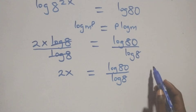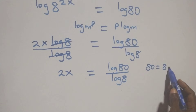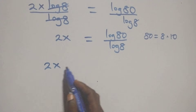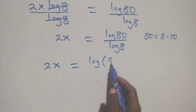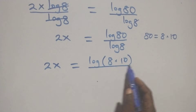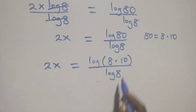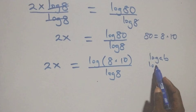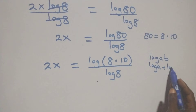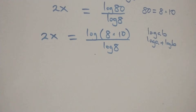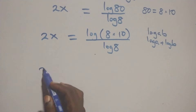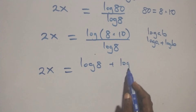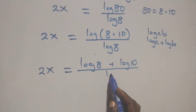Then, next step: we can write 80 as 8 times 10. What we have becomes 2x equals log(8 times 10) over log 8. This follows the law of logarithms: log(a times b) is the same thing as log a plus log b. So we have 2x equals (log 8 plus log 10) over log 8.